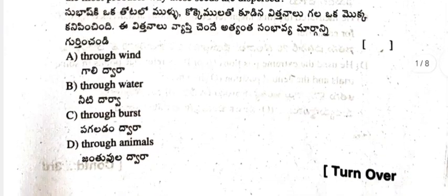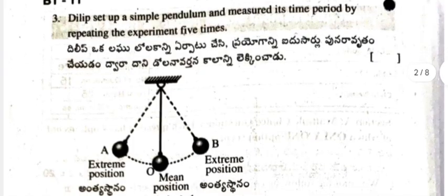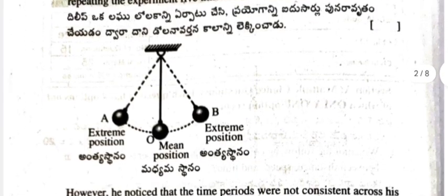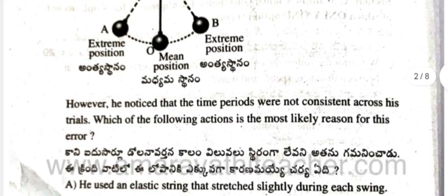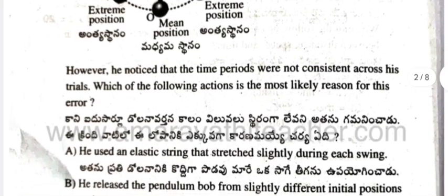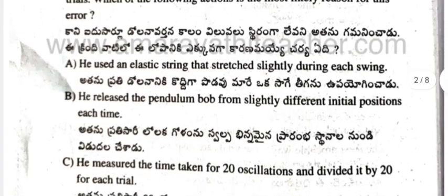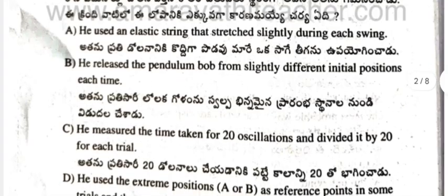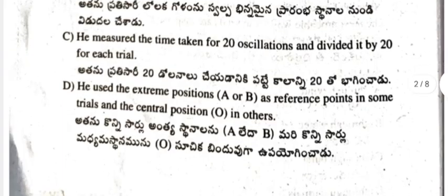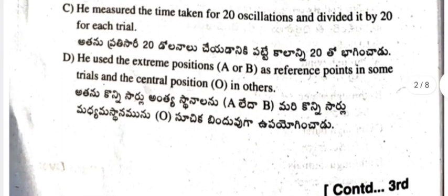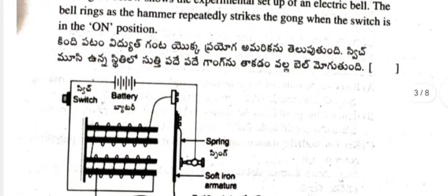Question 3: Dilip set up a simple pendulum and measured its time period by repeating the experiment five times, from extreme position to mean position to extreme position. He noticed that the time periods were not consistent. Which of the following is most likely the reason? (a) He used an elastic string that stretched slightly during each swing. (b) He released the pendulum bob from slightly different initial positions each time. (c) He measured the time for 20 oscillations and divided by 20. (d) He used extreme positions A or B as reference in some trials and central position O in others.